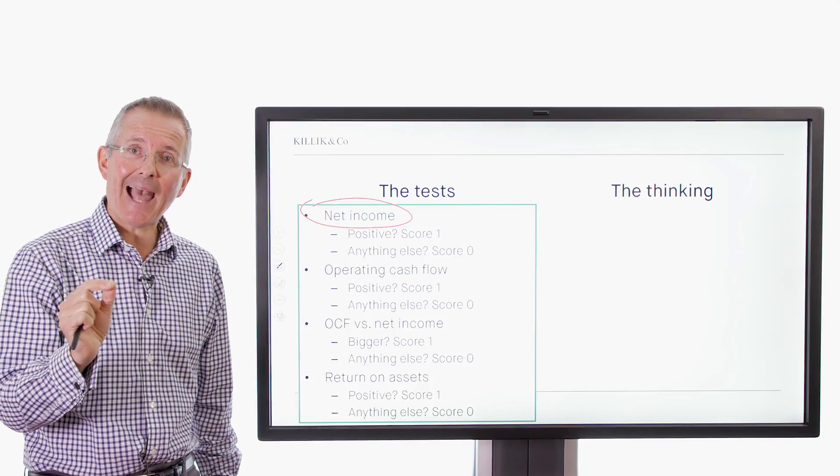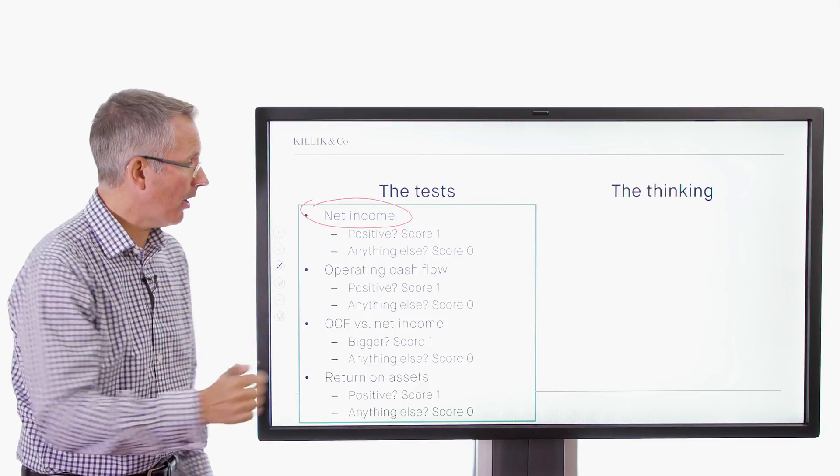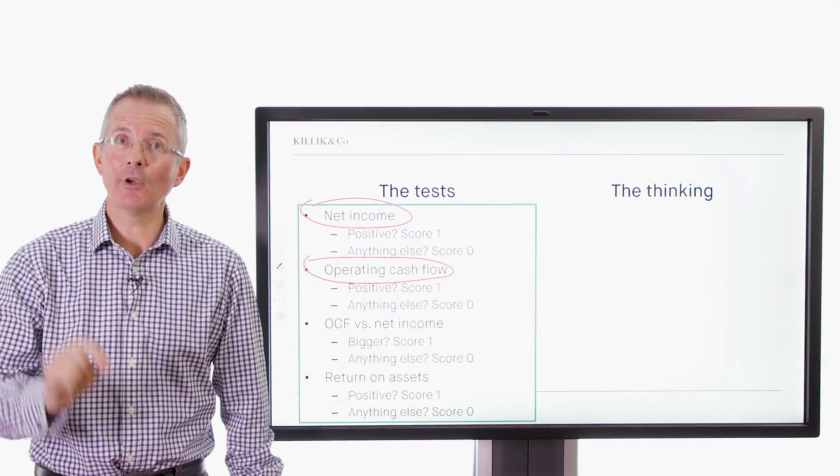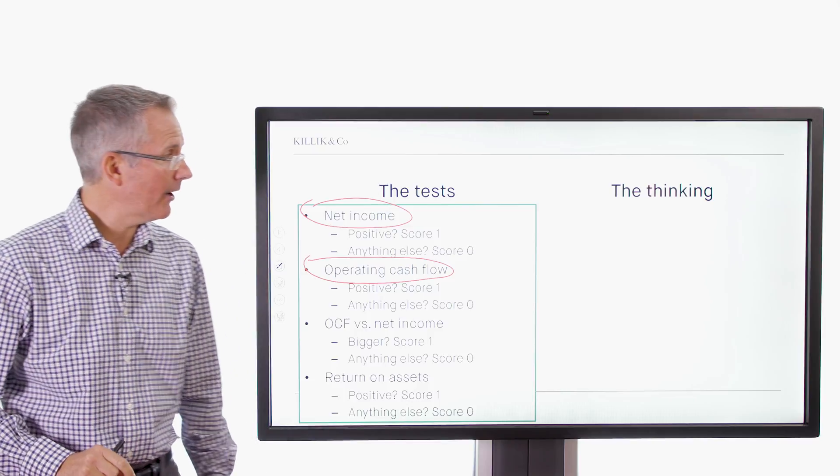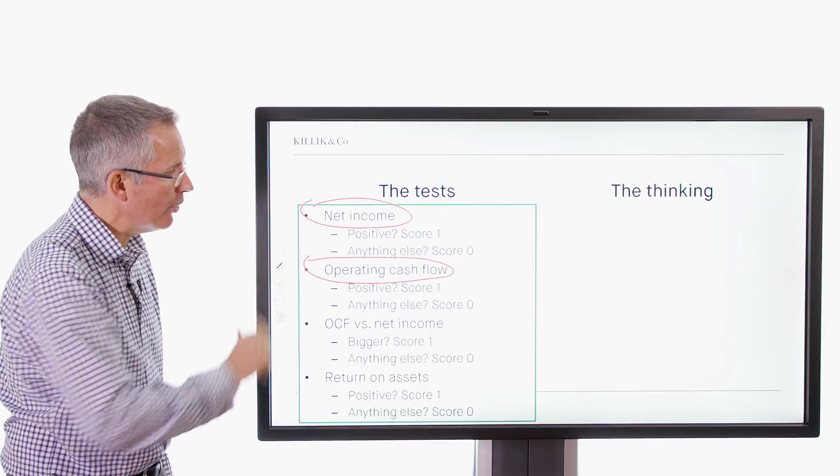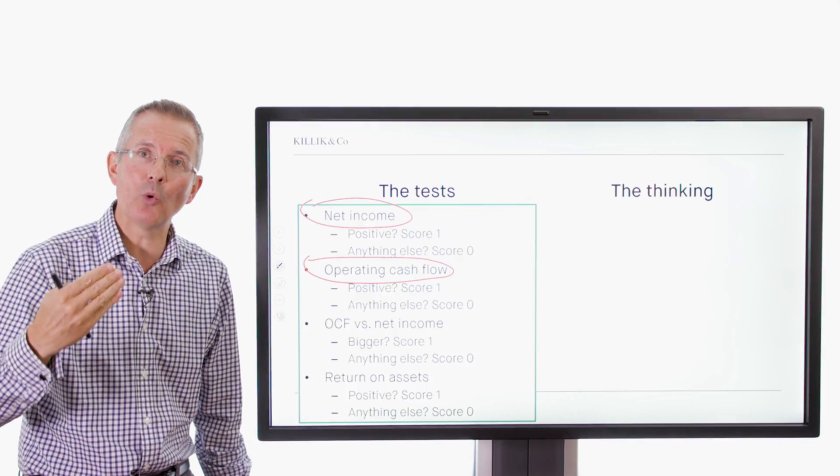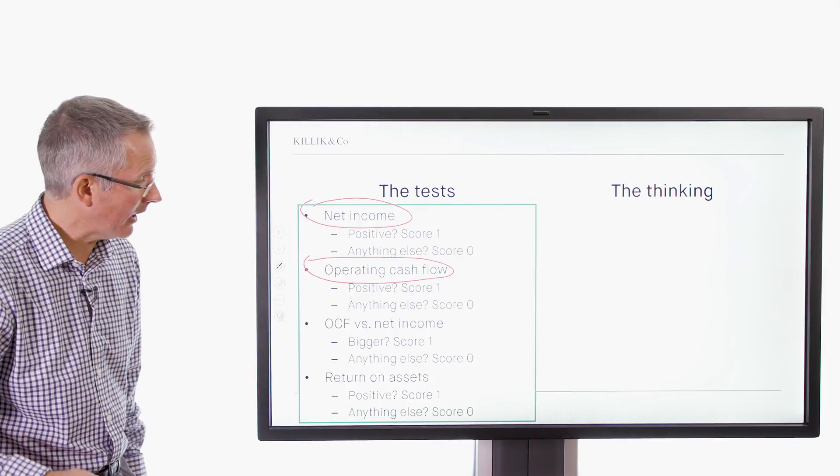Now, if that's backed by operating cash flow, have another point. So now you're up to two. If it isn't, then score nothing. Okay, so your maximum score so far, two, minimum zero. And that's how this system works. You're trying to build towards eight or nine points as a company to get the maximum score.